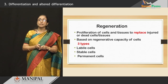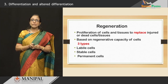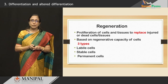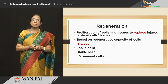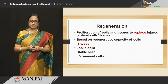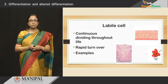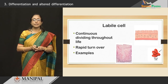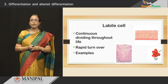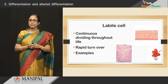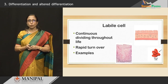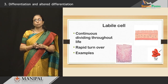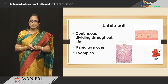Different cells have different regenerative capacity. Based on the regenerative capacity of cells, we can divide all cells into three types: labile cells, stable cells, and permanent cells. Labile cells are the cells which go on dividing continuously throughout life. They are getting replaced every day and there is a rapid turnover. Many of the cells in our body are labile cells.